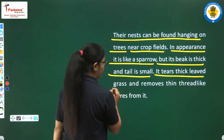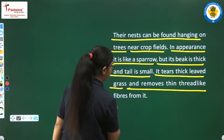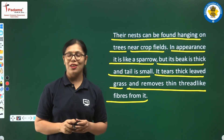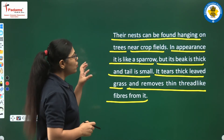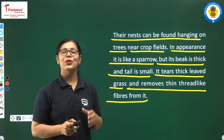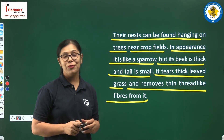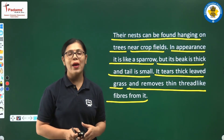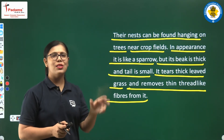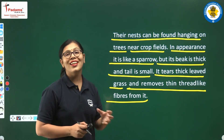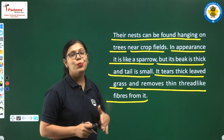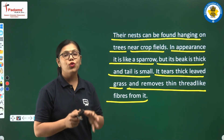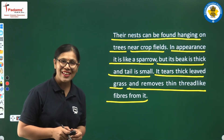It tears thick-leaved grass and removes thin thread-like fibers from it to make its beautiful nest. In appearance this bird is like a sparrow — small and similar — but its beak is thicker than a sparrow's and its tail is smaller than a sparrow's. It tears thick-leaved grass and makes thread-like structures from that torn grass.